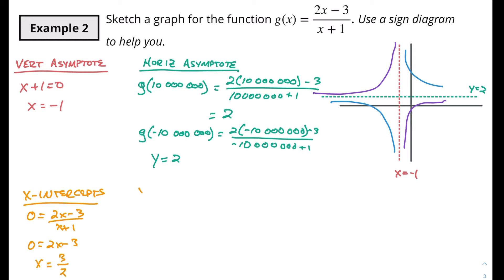And then for my y-intercept I'm gonna be looking at when x is 0. So y is gonna equal 2 times 0 minus 3 over 0 plus 1. So y is gonna equal negative 3 over 1 which is negative 3. Alright so I've got a y-intercept at negative 3. Let's say roughly right there. And I've got an x-intercept at positive 3 halves. So right here.